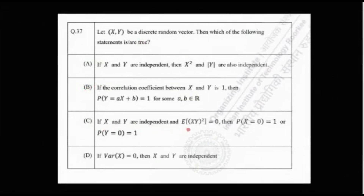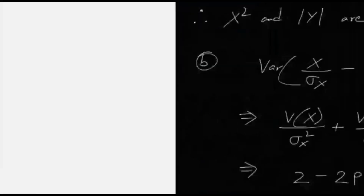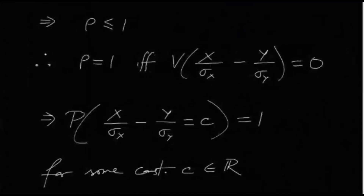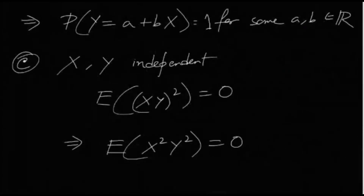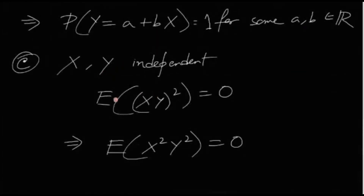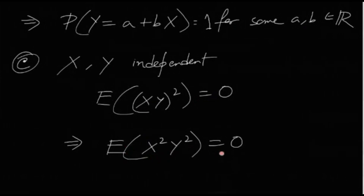Option C: if X and Y are independent and E[(XY)²] = 0, then P(X = 0) = 1 or P(Y = 0) = 1. Since E[(XY)²] = E[X²Y²] = 0, and X, Y are independent, this equals E[X²] · E[Y²] = 0.